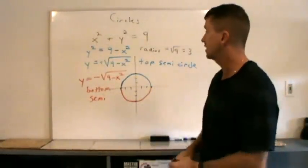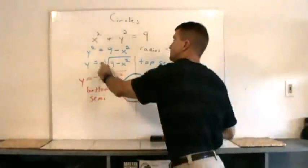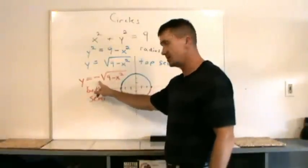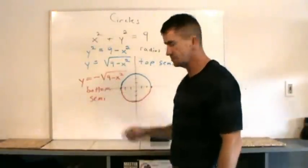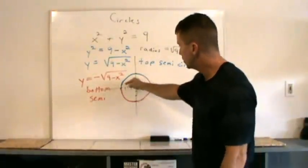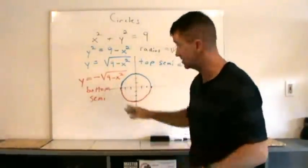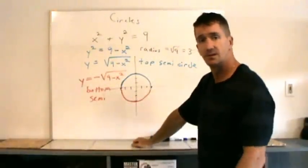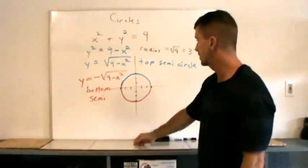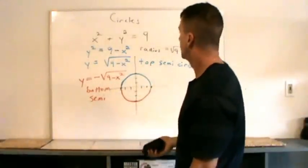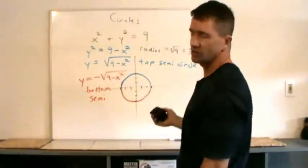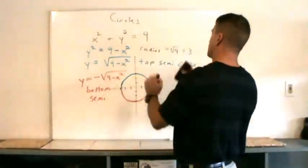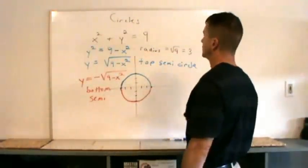If you have a graphing calculator, you type this equation into the y equals menu, type the other one also, hit graph, and it will form each of the two functions separately to form the full circle. Now, circles can shift.